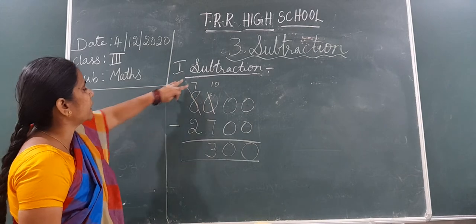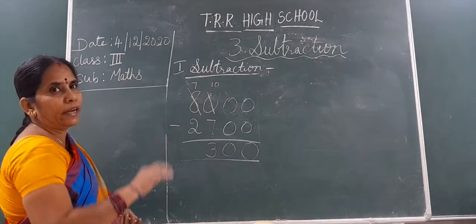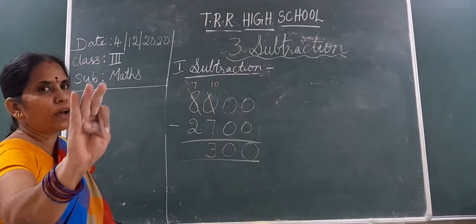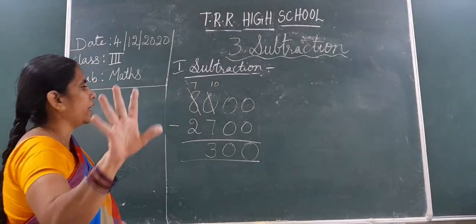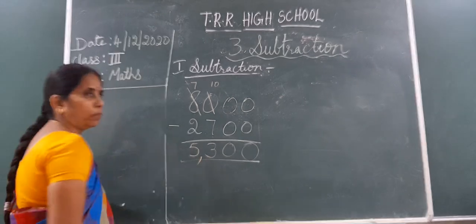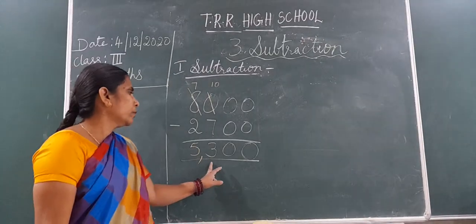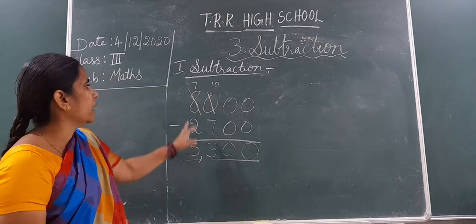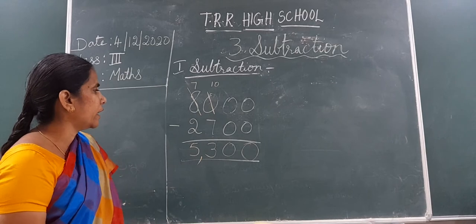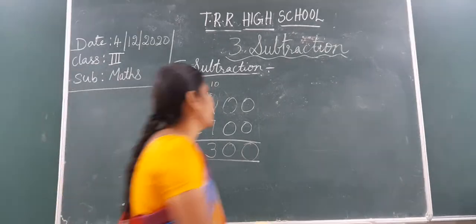Now, what is the thousands? 7 minus 2. Again close fingers. 2 after 3, 4, 5, 6 and 7. How many fingers you open? 5 fingers. After 3 digits, you put comma. What is the answer? 5300. 8000 minus 2700 is equal to 5300. Okay.